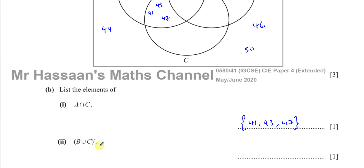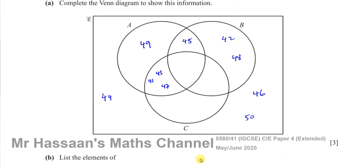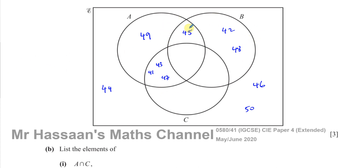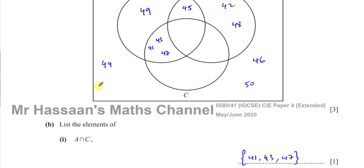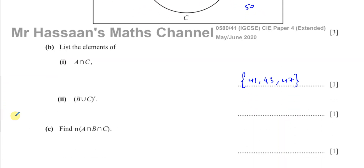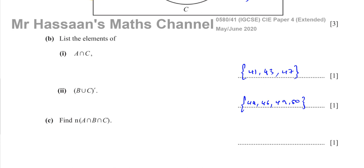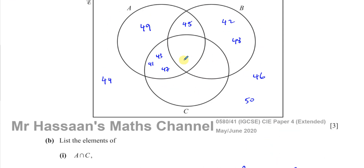Next, find the complement of B union C. B union C is everything inside circles B and C together. The complement means all numbers in the universal set that are not in B union C — everything outside those two circles. That gives us 44, 46, 49, and 50. So (B∪C)' = {44, 46, 49, 50}.